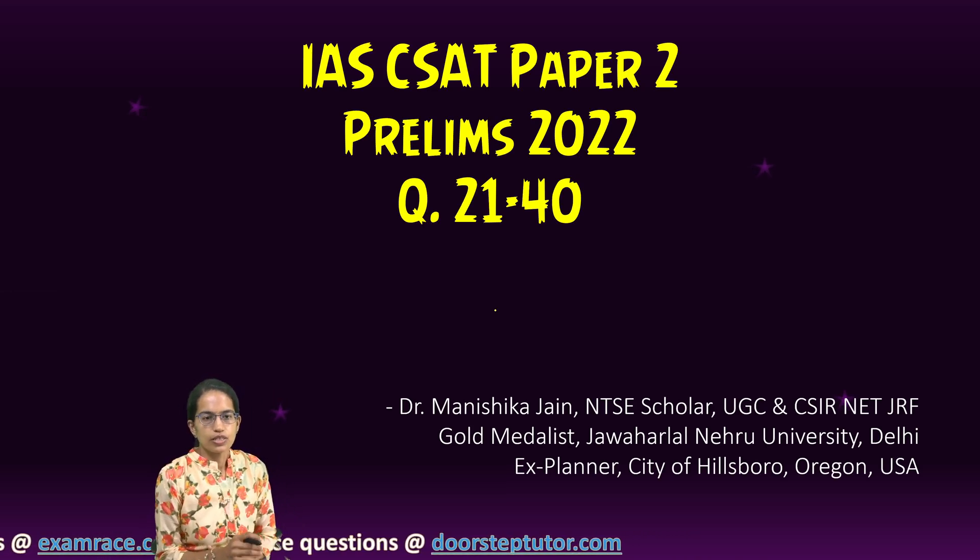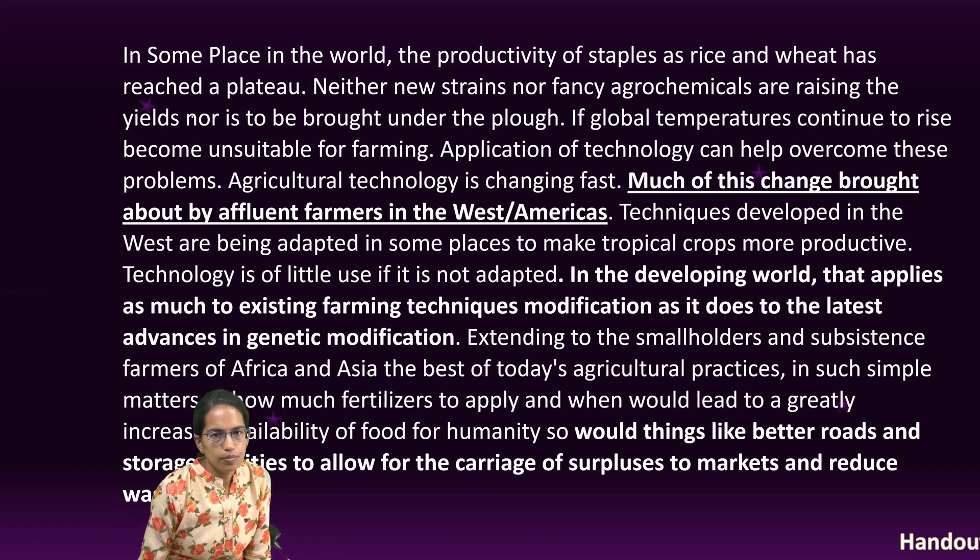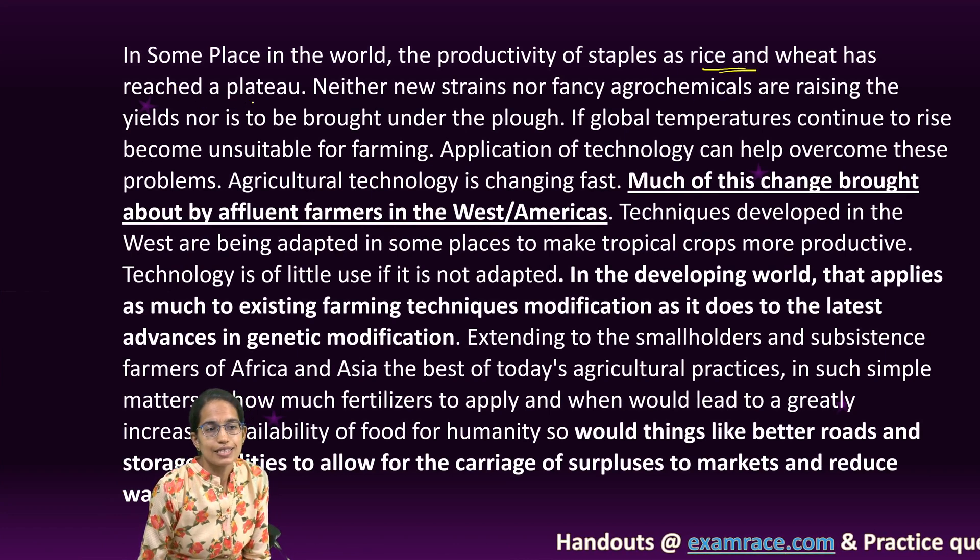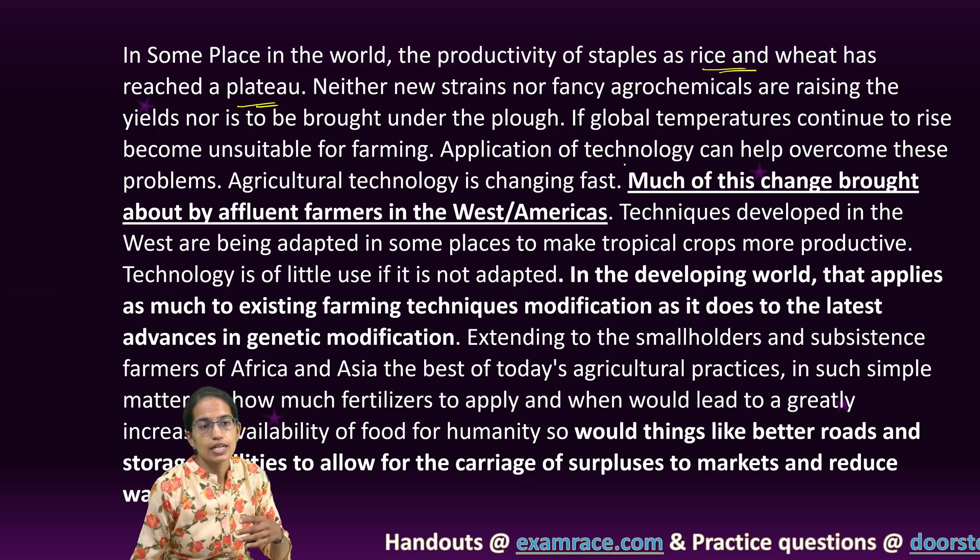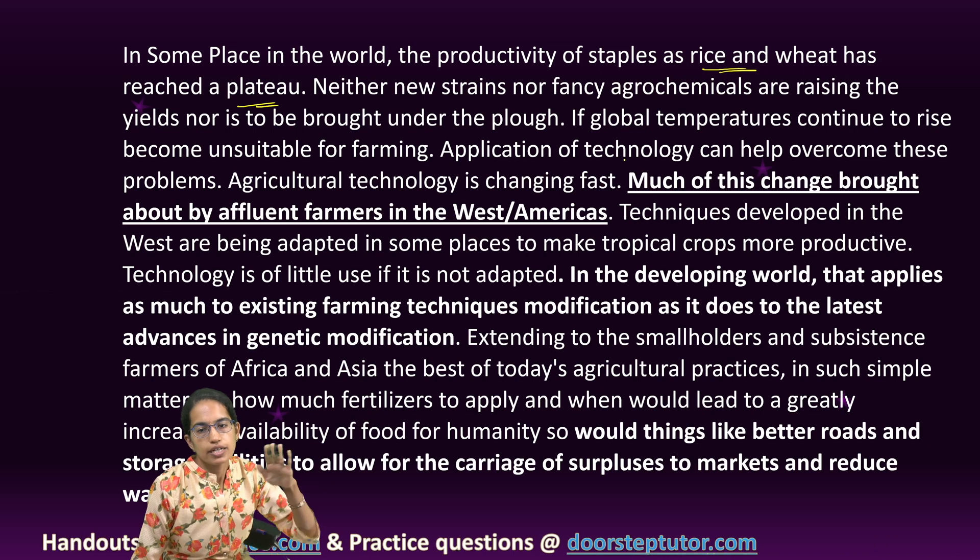Let's start with the next set for CSET Paper 2, Prelims. The first set talks about the productivity of staple crops like rice and wheat and this has reached a plateau. It says that neither new strains nor agrochemicals are raising the yields. It is now stable.